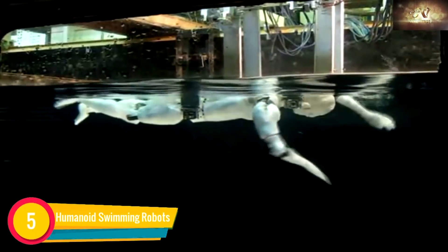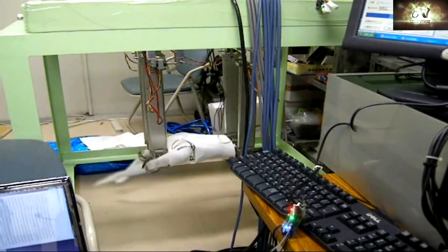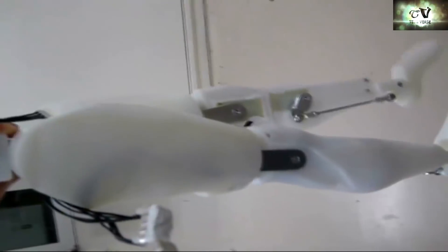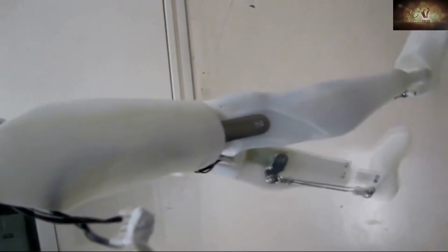Humanoid Swimming Robots. This robot was created by two students of Tokyo Institute of Technology. It is called Swoominoid, which is a short version of Swimming Humanoid.